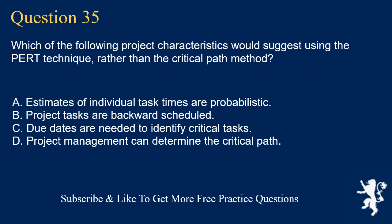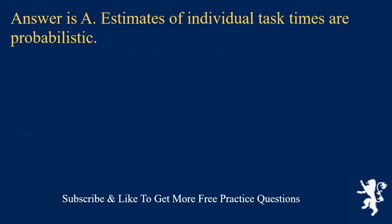Question 35. Which of the following project characteristics would suggest using the PERT technique rather than the critical path method? A. Estimates of individual task times are probabilistic. B. Project tasks are backward scheduled. C. Due dates are needed to identify critical tasks. D. Project management can determine the critical path. Answer is A. Estimates of individual task times are probabilistic.